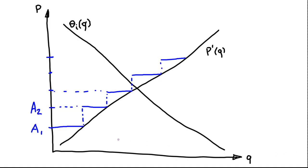The next limit trader who gets to choose will no longer find it profitable to submit another order at the same price, because their marginal profit from doing so will be negative — below the fair expected value of the asset. So they jump to the next tick. We can illustrate this process with a graph: the black curve P'(Q) represents the conditional expectation of V given that trade size Q exceeds the argument, which is the price the limit trader is willing to set.